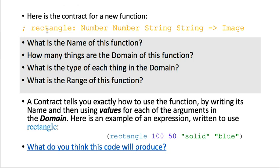So here's the contract for a new function. What's the name of this function? The name comes right after the semicolon. In Python we use the pound sign as the comment, but Racket uses semicolon. So rectangle is the name of the function. It takes in one, two, three, four arguments: a number, a number, a string, and a string. And all together those produce an image. The domain is number, number, string, string, and the range is an image.